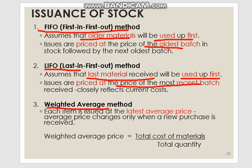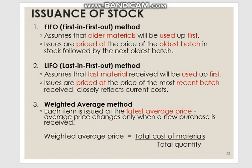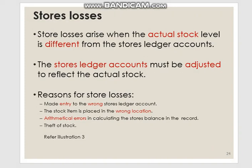The last method is the weighted average method. Here we issue at the average price. To calculate the average price, we multiply each price by its quantity — one ringgit times its quantity, plus two ringgit times its quantity, plus three ringgit times its quantity — then divide by the total quantity. This gives us the average price.